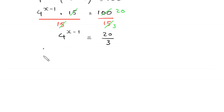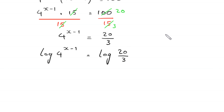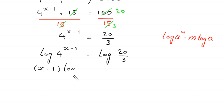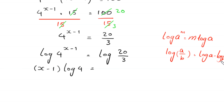Now, from here we take the log of both sides. Log of 4 to the power x minus 1 is equal to log of 20 over 3. Using the log property — log of a to the power m is equal to m times log of a — this becomes x minus 1 times log of 4 is equal to log of 20 minus log of 3. From here we divide both sides by log of 4.